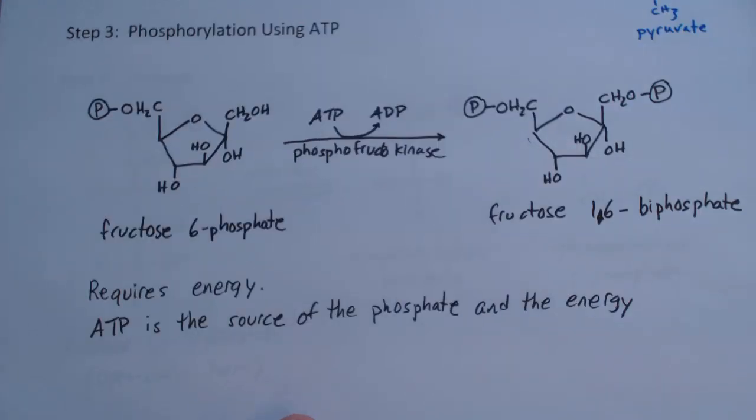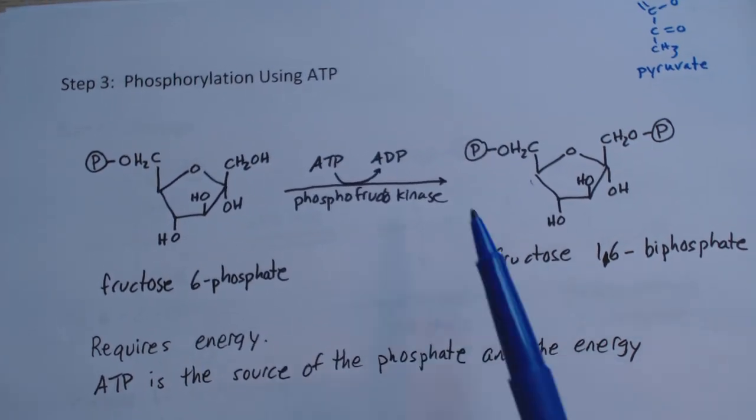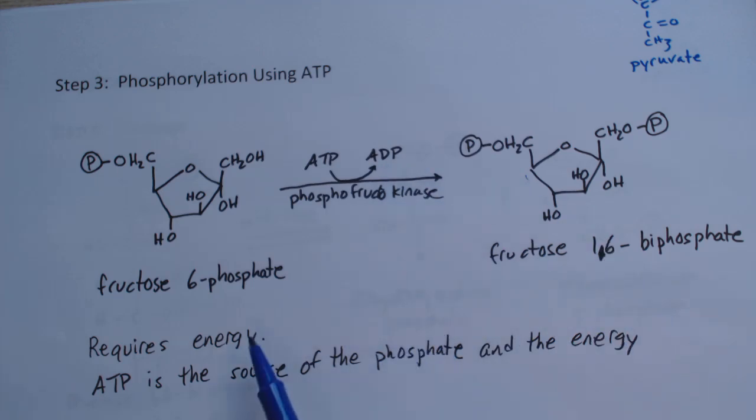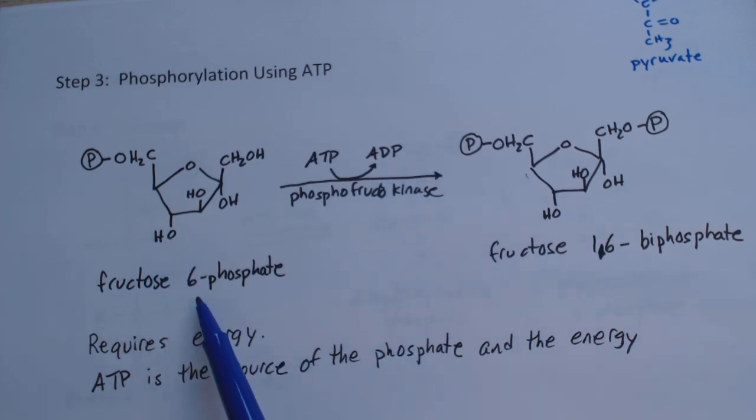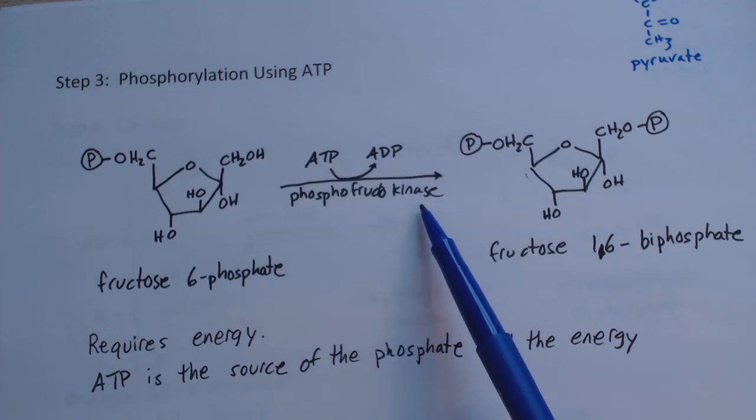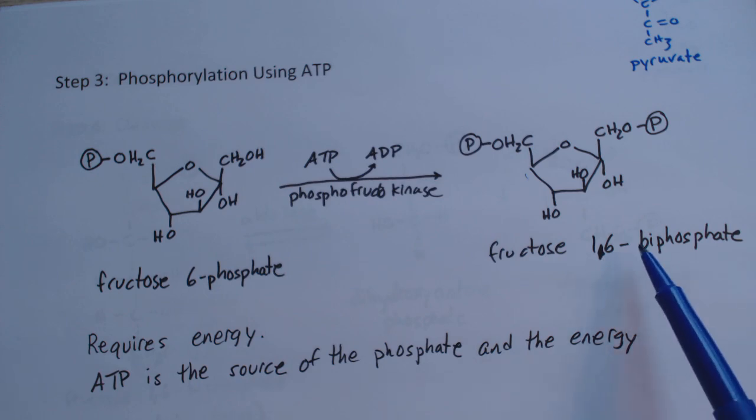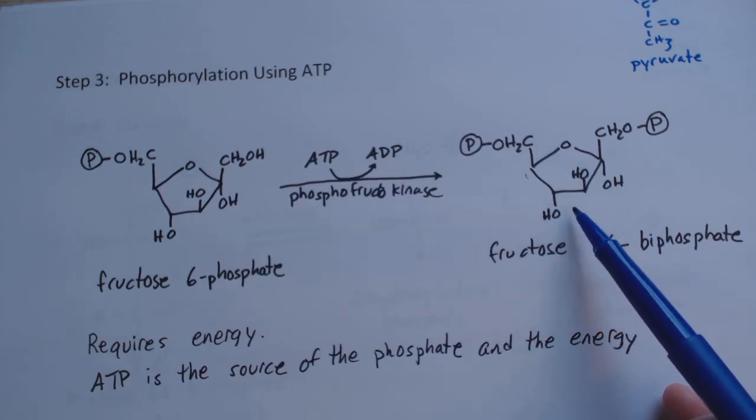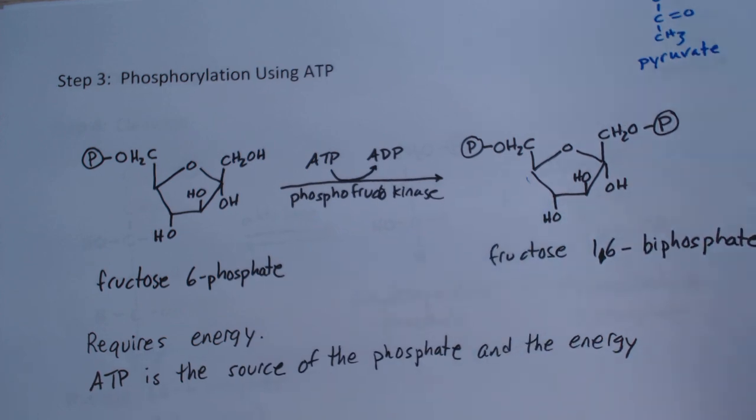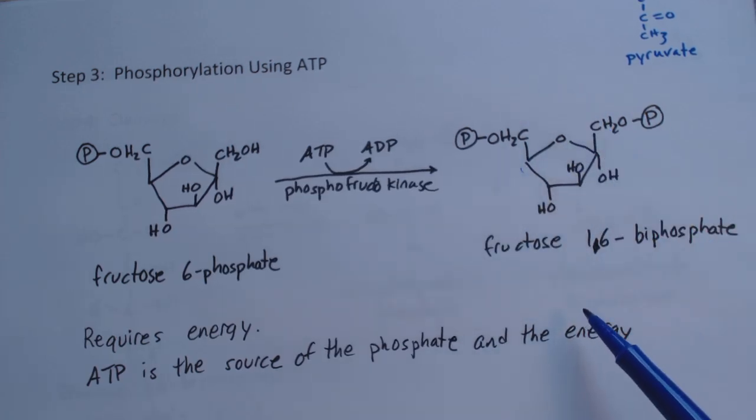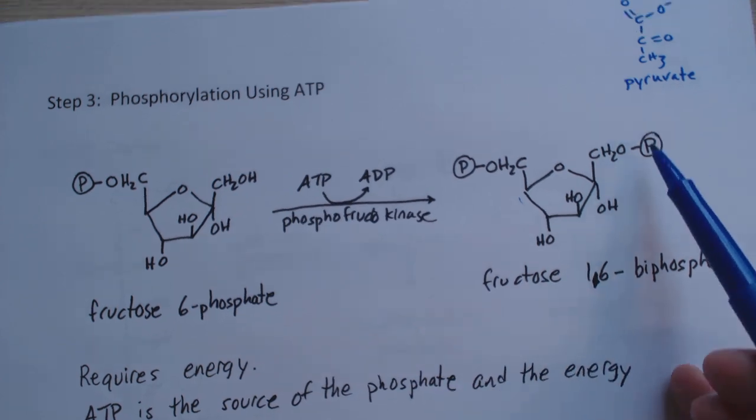Step 3 is phosphorylation using ATP again. Energy must have gone in because we used ATP and it turned into ADP. The enzyme phosphofructokinase attaches a phosphate to the fructose-6-phosphate, making it fructose-1,6-bisphosphate. Now we have much more symmetry here. Since we have six carbons and want three, it seems like we'd want to split this in half to eventually end up with pyruvate, which has three carbons.